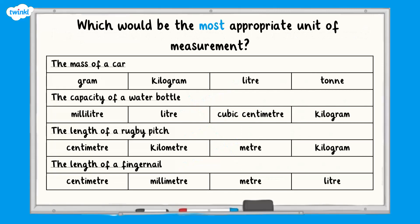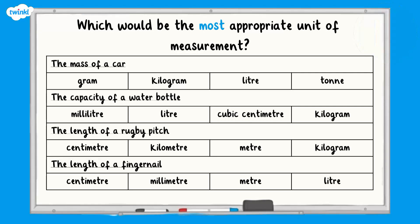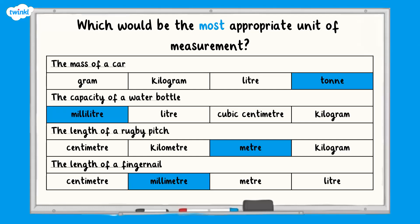For the next question, have a think about which would be the most appropriate unit of measurement. Here are the answers: the most appropriate unit for the mass of a car would be a tonne; for the capacity of a water bottle, it would be millilitres; for the length of a rugby pitch, it would be metres; and for the length of a fingernail, it would be millimetres.